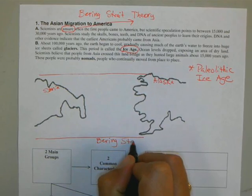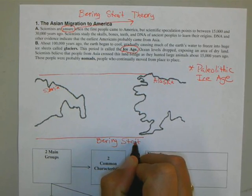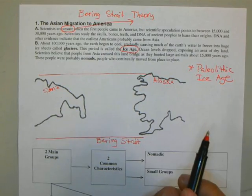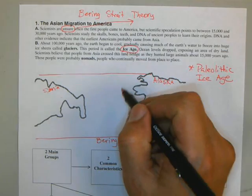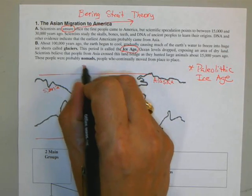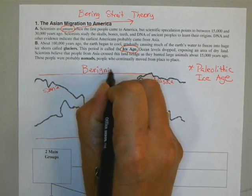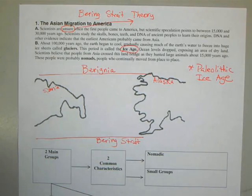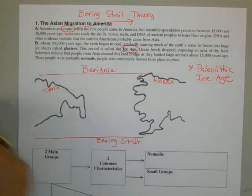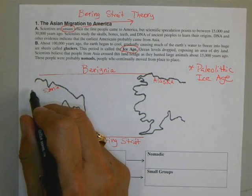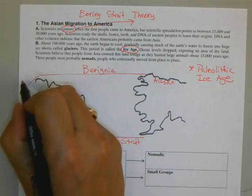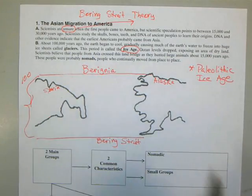If you remember your geography, a strait is a narrow waterway that connects two large landforms. According to the Paleolithic Ice Age, scientists theorize that the distance on this land bridge is about 100 miles. Again, it's just a theory.